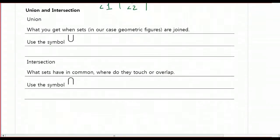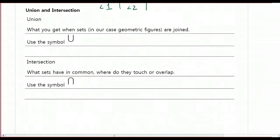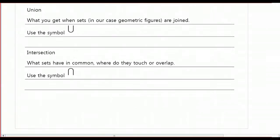The next concept that we're going to talk about is union and intersection. Union is what you get when sets, in our case our sets are going to be geometric figures, are joined. So we're putting things together. If you think of a union like a marriage, when two people get married, everything that each of them had separately, now they are put together. And then the symbol that we use is a big U shape here.